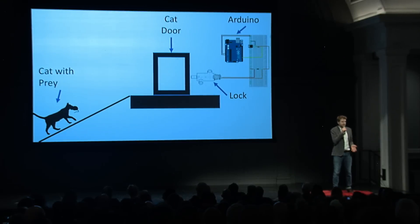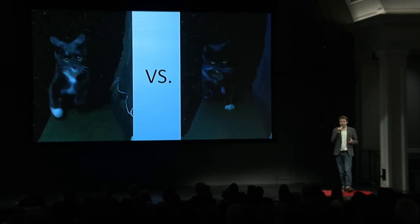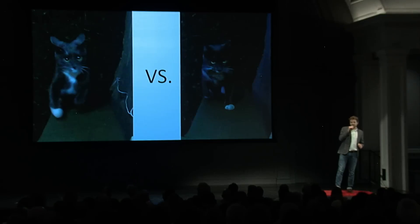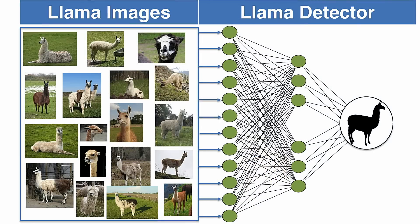The hard part is detection: how to tell when my cat is coming in normally versus when it's murder-cat Metric trying to ruin my night. To do this, I use the hottest new tech in image processing — machine learning.